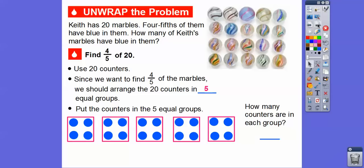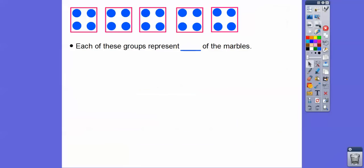Let me slide that up here. So how many counters are in each group? Well, it's pretty easy to see that there's four counters in each of these groups. So remember, we're going to find this is in fifths right here. We got them separated into five equal groups. So here's one-fifth, here's two-fifths, here's three-fifths, here's four-fifths, here's five-fifths. You can probably see what we're going to do next. So each of these groups represents one-fifth of the marbles.